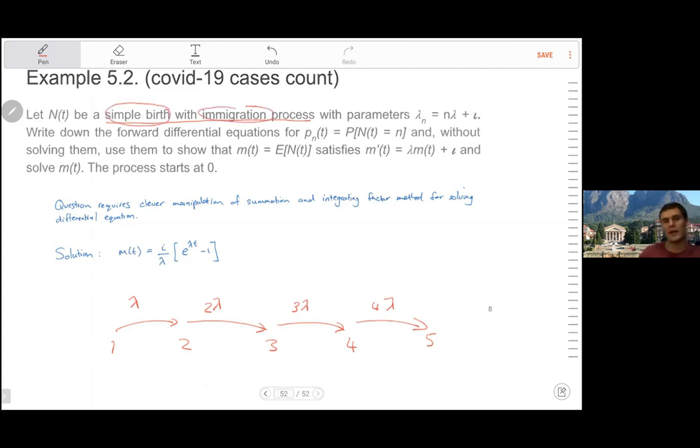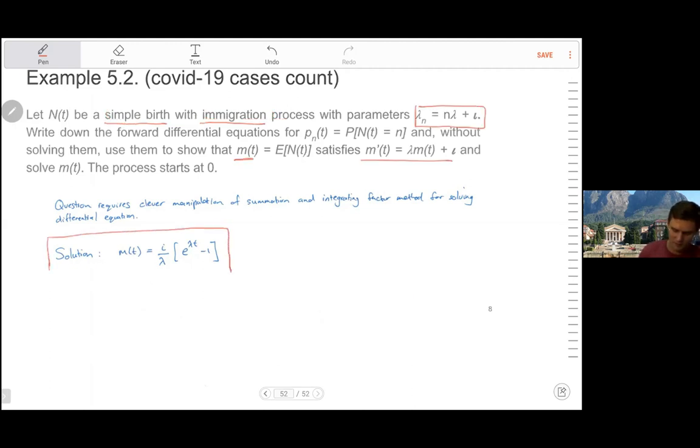Immigration is an external unchanging rate at which people are entering the system, but not proportional at a fixed rate, not proportional to the number of cases in the country. This is the ultimate solution to that expected value worked out. And this is a question I'm going to leave you to do yourself.